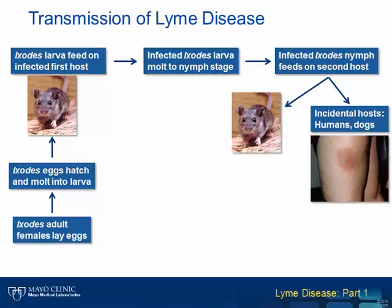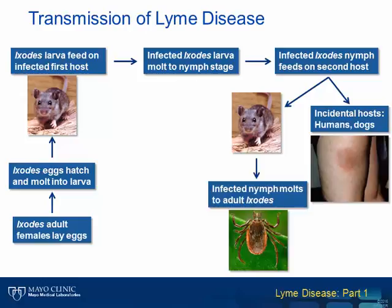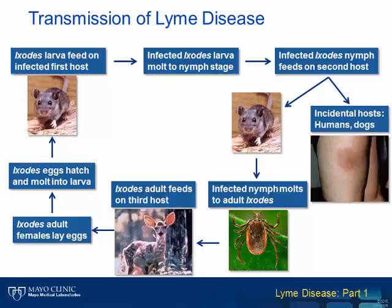Importantly, humans are considered an incidental or dead-end host for Borrelia species, as we cannot transmit the bacteria back to a naive tick. Following the second feeding, nymphs will molt into adult ticks, which prefer to feed on larger animals such as deer, after which females will lay eggs, completing the life cycle, which in total takes approximately two years.